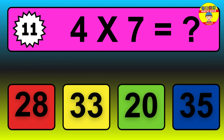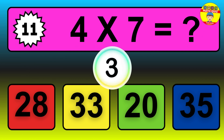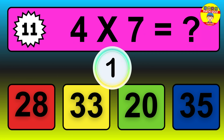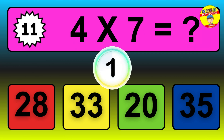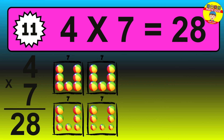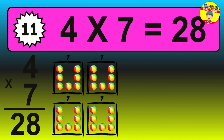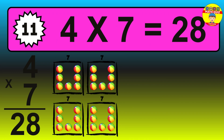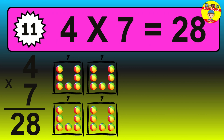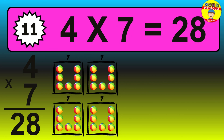Question 11. 4 times 7 equals what? The answer is 4 times 7 is 28. To calculate, we have 4 groups with 7 balls each one. So, how many balls do we have? 28 balls.